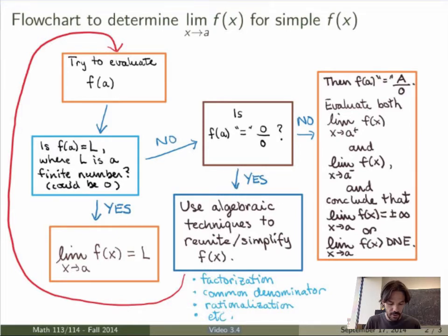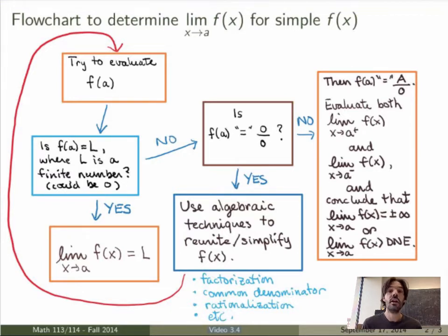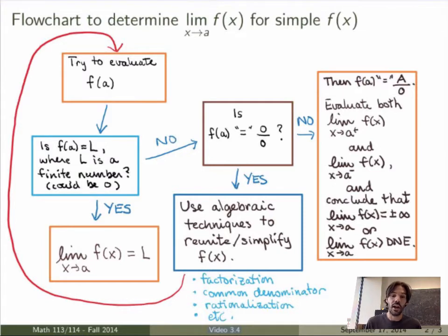If it happens that when you evaluate the function at x equals a you don't get a finite number, then you have to see what you did get. If you get 0 over 0 — which is a case that will occur frequently when we evaluate limits of difference quotients — then you have no idea what 0 over 0 is. It could be finite, it could be 0, it could be infinite. So what you need to do is use algebraic techniques to simplify the expression that you have.